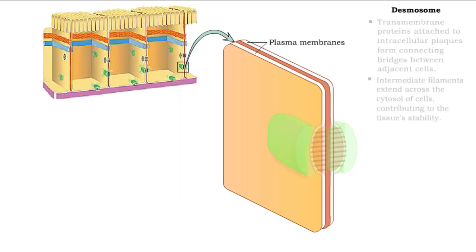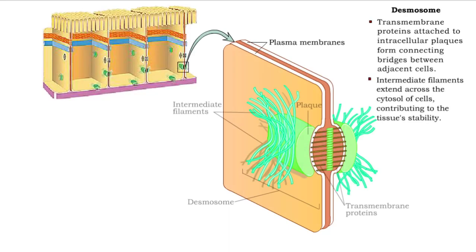The desmosome is similar in structure to the adherence junction, except that intermediate filaments extend into the cytosol of each cell.